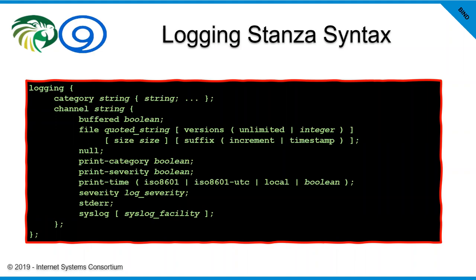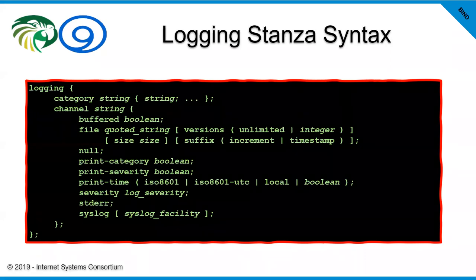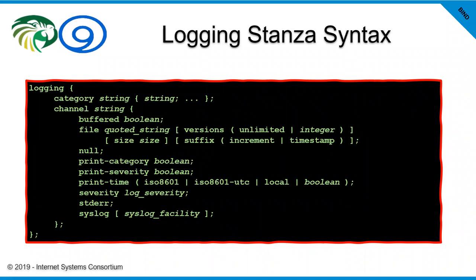The 'file' statement takes a quoted string defining where on disk the data in this channel will be written. For example, '/var/log/bind/query.log'. If you have a directory statement in your global options and the file path does not start with a slash, it will be placed relative to that directory. Remember: if you are running chroot, this file is going to be created in the chroot'd directory structure, not in the main operating system directory structure. If you have both a directory statement and are running chroot, remember to chroot first, then add the directory.